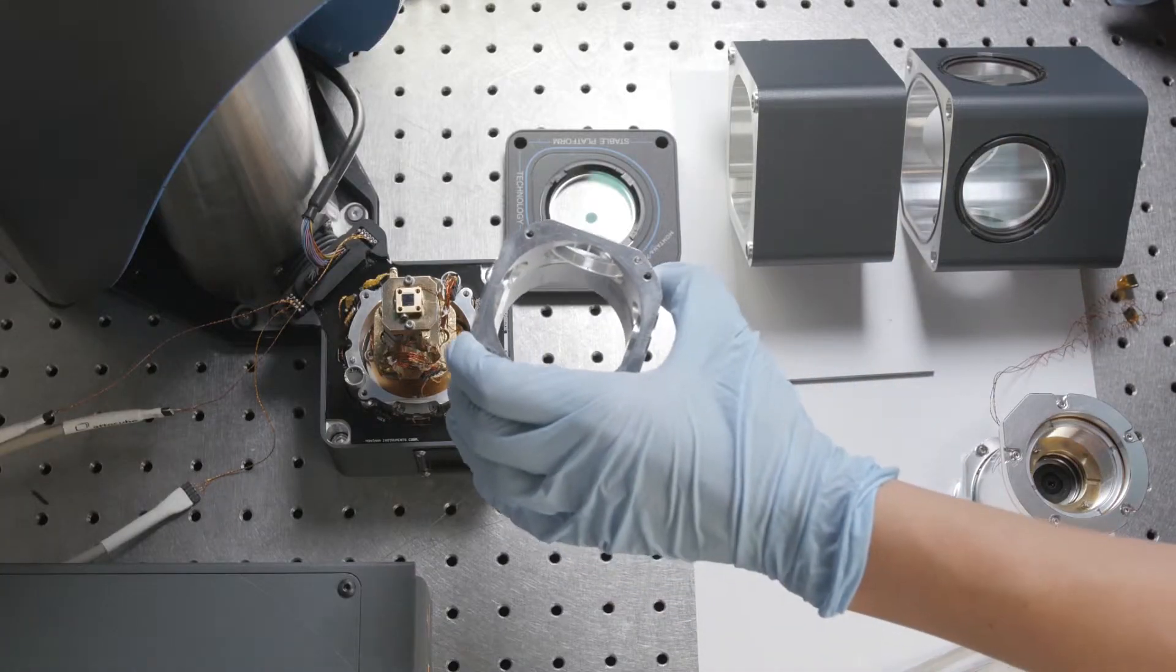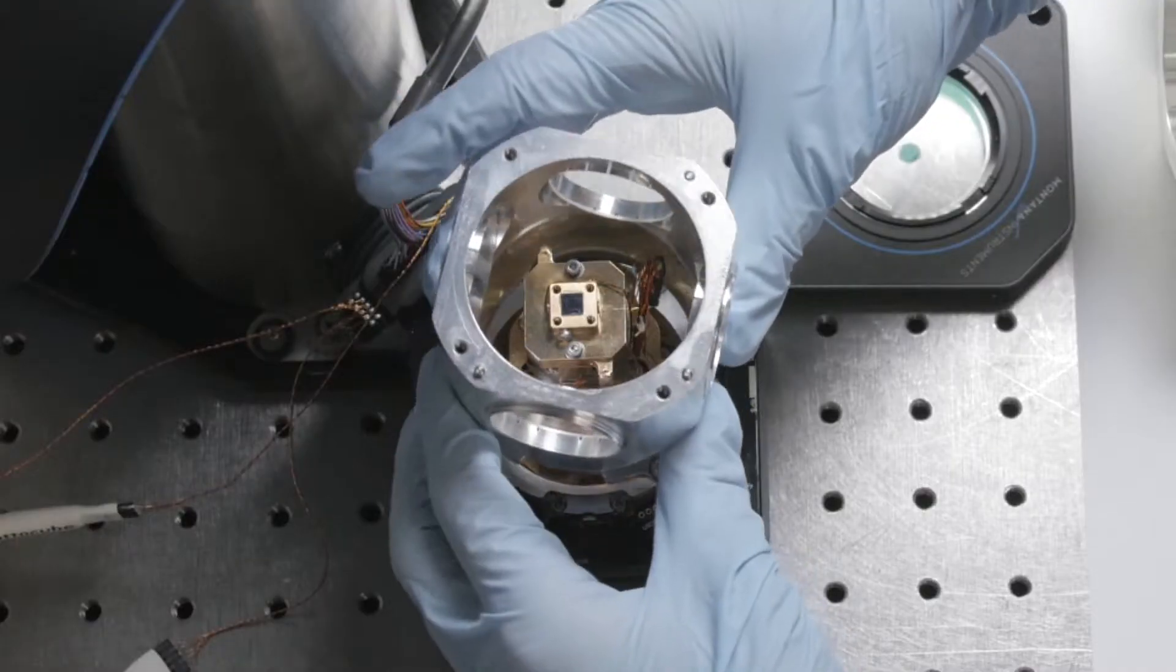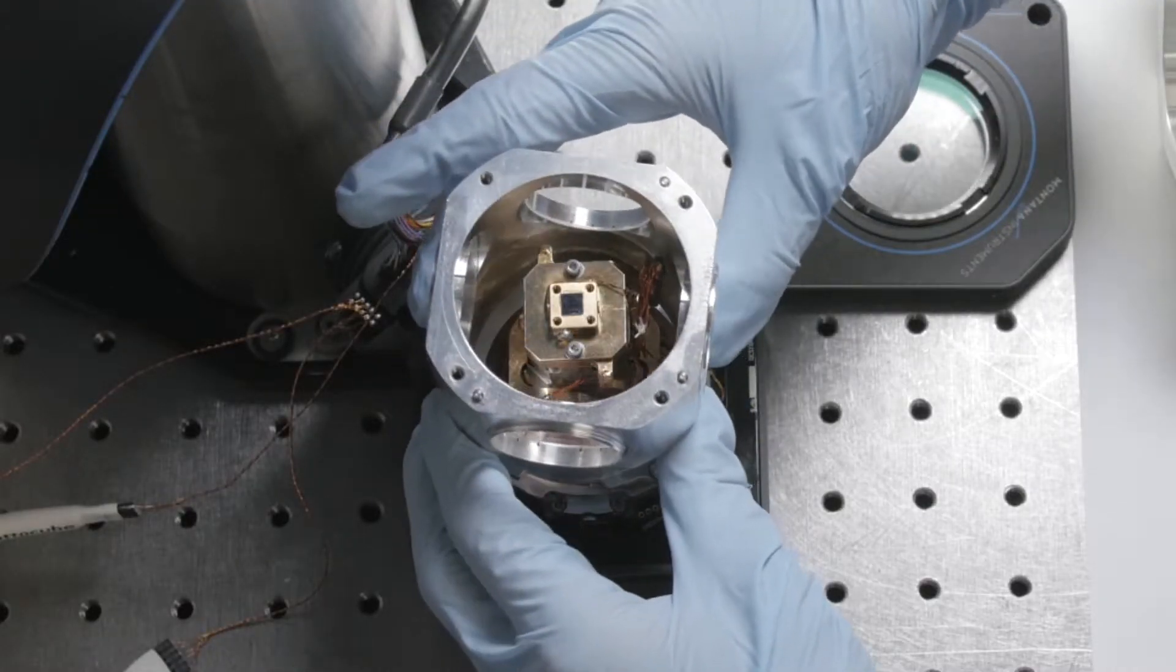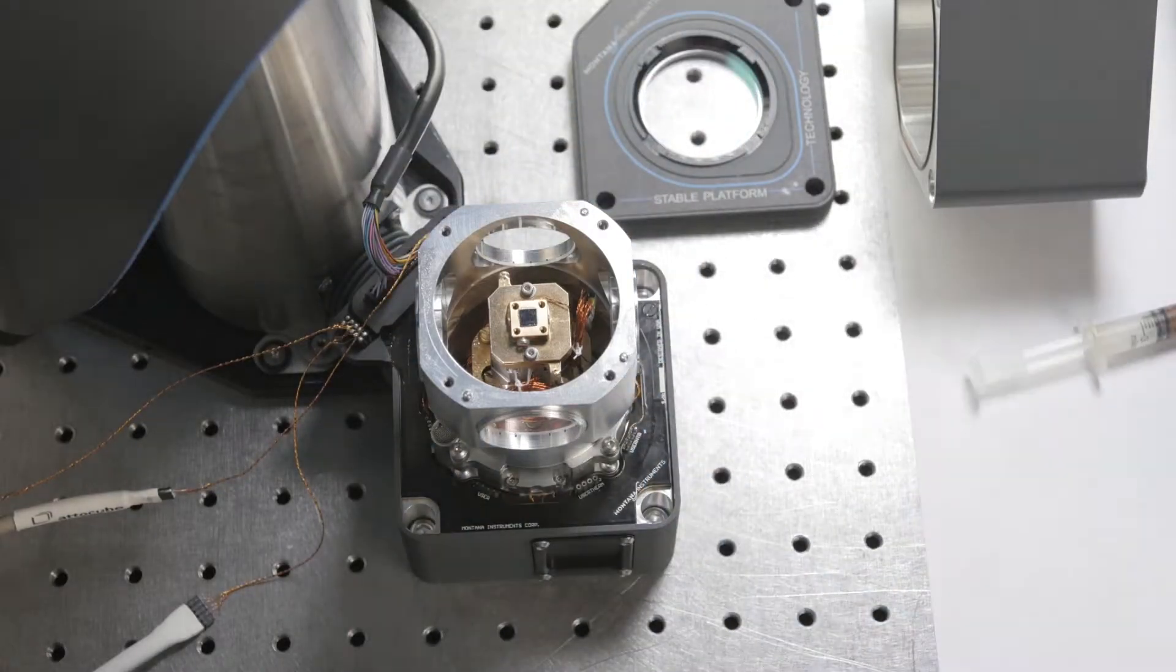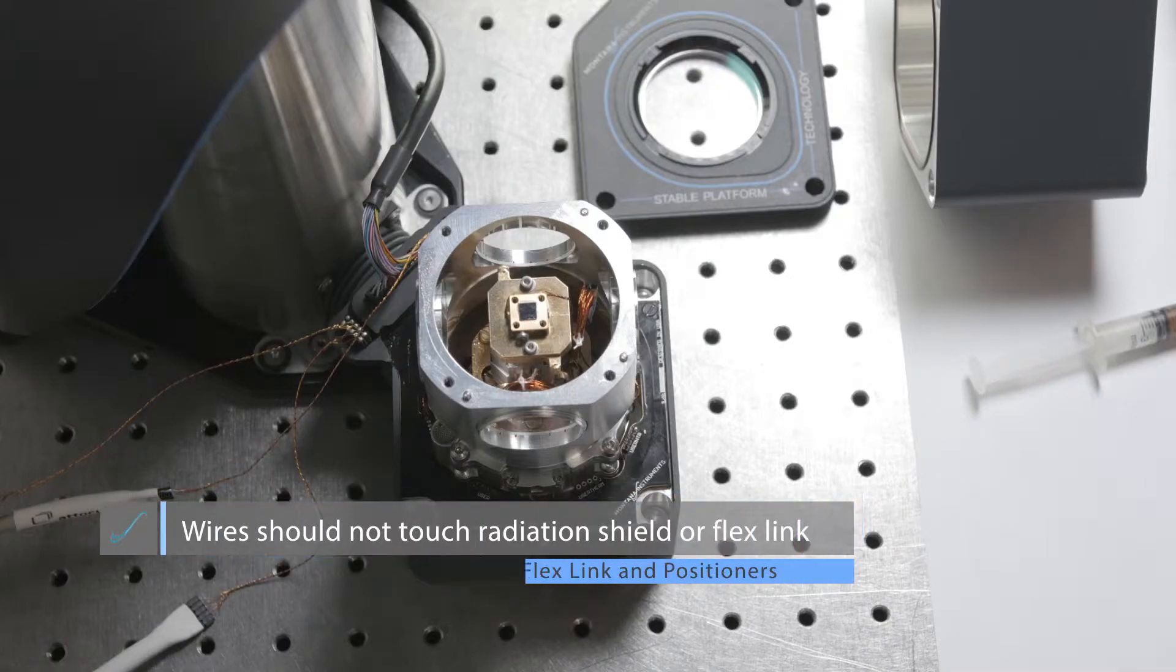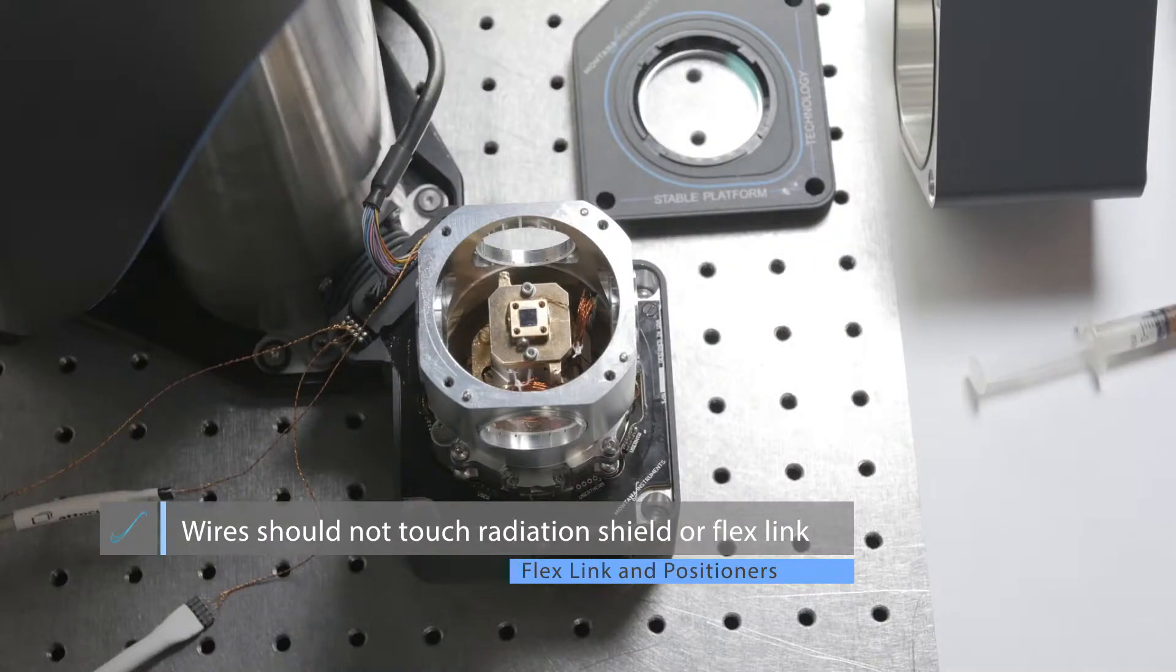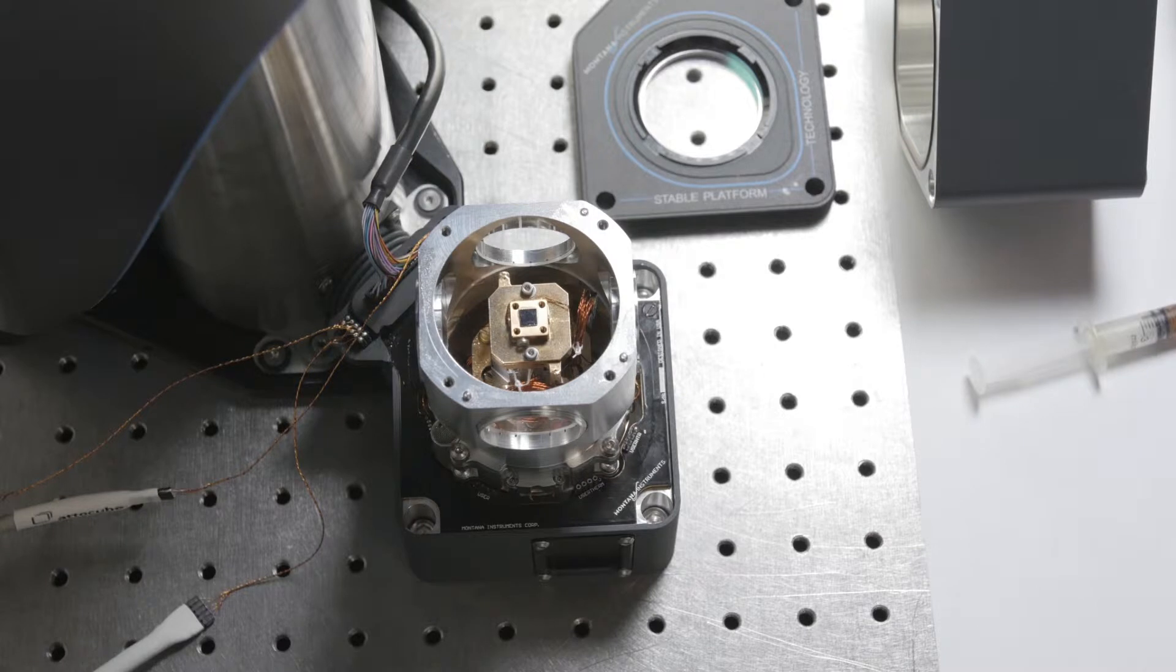Then we'll put on the middle portion of the radiation shield. Again, as you put on the radiation shield, make sure no wires touch. Before I tighten that down, I'm going to run the stages their full range to make sure that the wires don't touch the side of the radiation shield. The Z stage is probably the easiest and doesn't usually cause any touches.